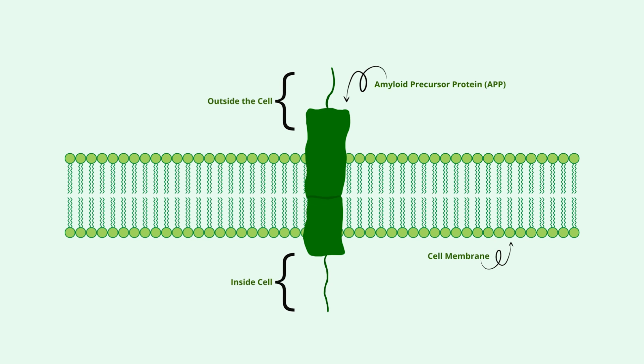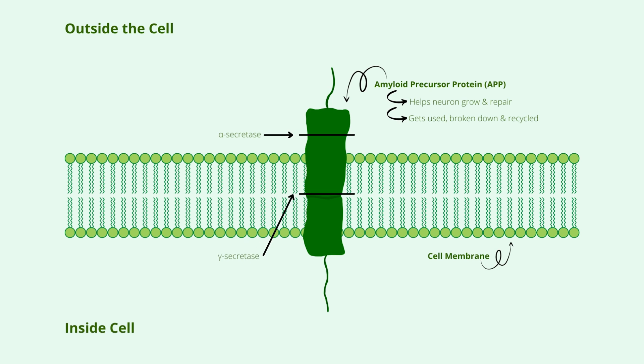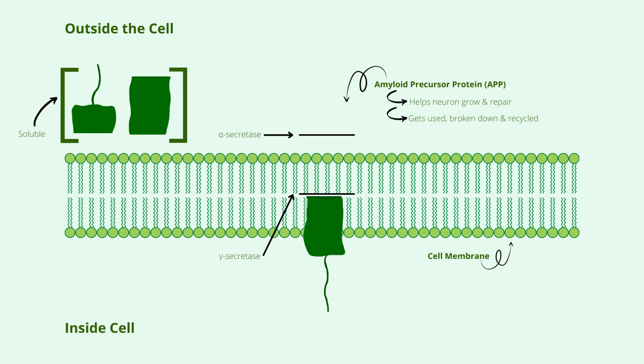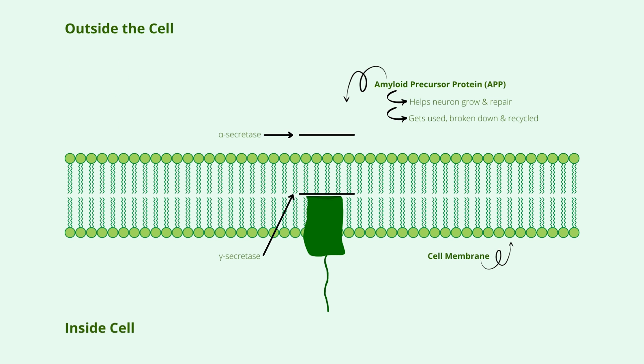This protein helps the neuron grow and repair itself after an injury. Since APP is a protein just like other proteins, it gets used up over time and gets broken down and recycled. Normally, it gets broken down by enzymes called alpha secretase and gamma secretase. This broken-up protein is soluble, and everything goes away under normal circumstances.